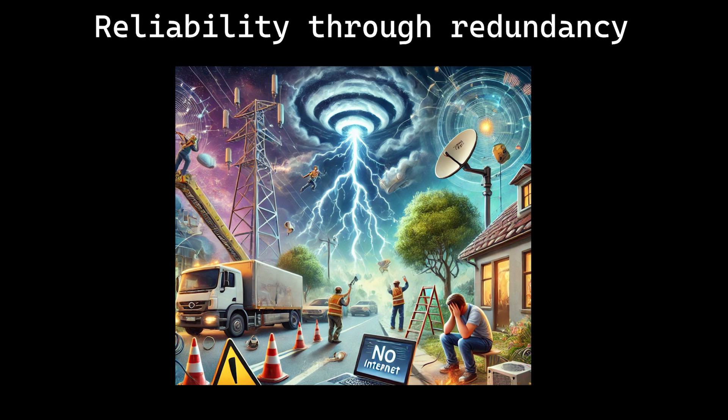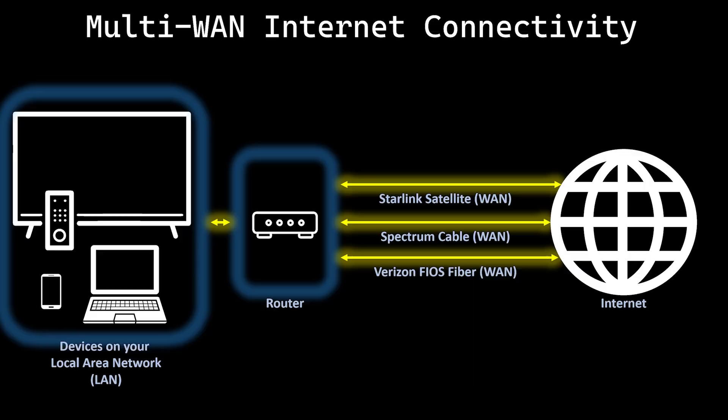To counter this, many homes in our neighborhood have permanently installed natural gas generators, including ours. That takes care of the power problem. But what about internet? I work from home and connectivity is critical. For me and many others who work or attend school from home, a loss of connectivity can be devastating. Many people want uninterrupted internet service and don't want to limp along using a phone as a hotspot. That's where multi-WAN comes in.